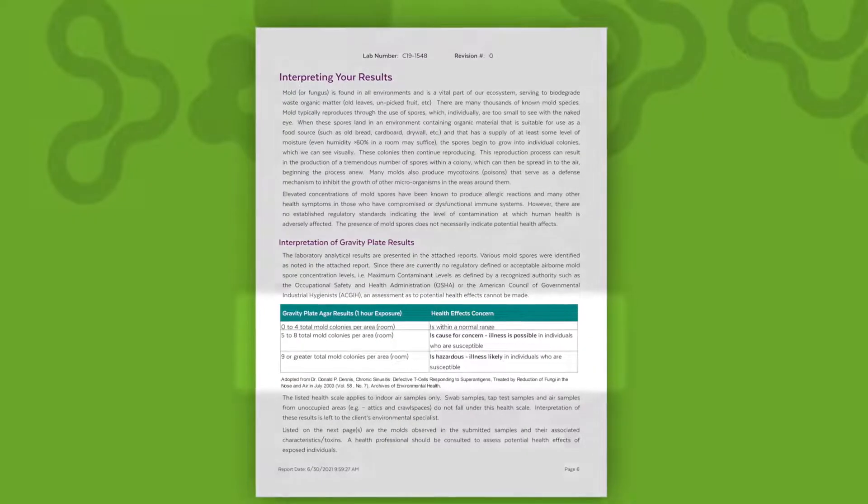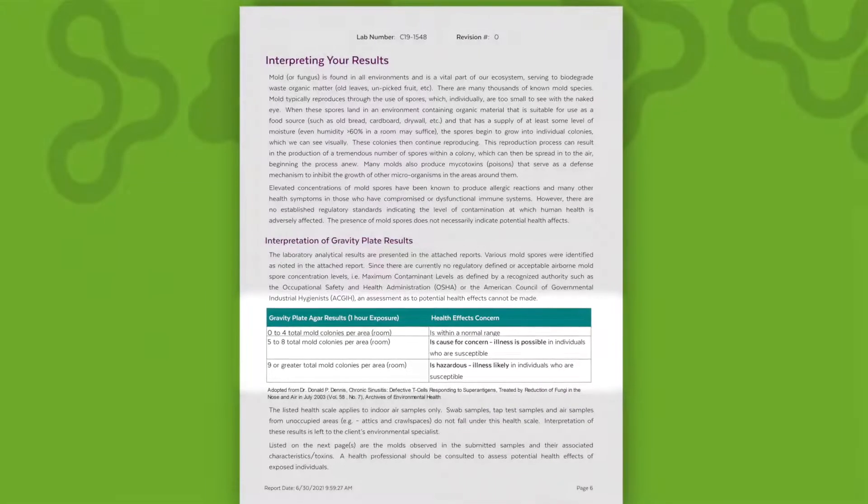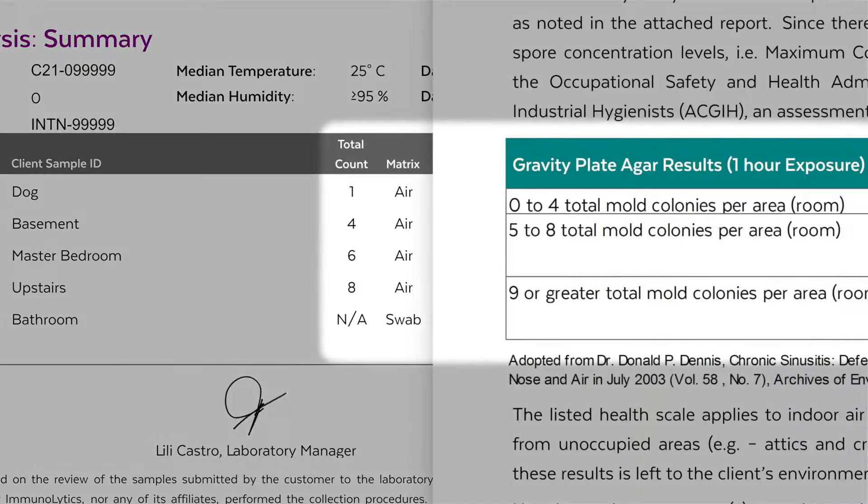On the next pages are the interpretations of the results. We'll begin with interpreting gravity plate or air results. In the middle of this page is a table that includes a health scale that is corresponding to the air samples. Use this table by comparing the total counts for each air sample in the previous section of this report.